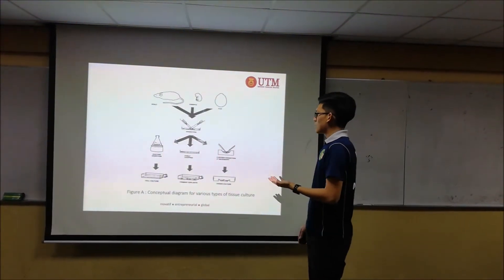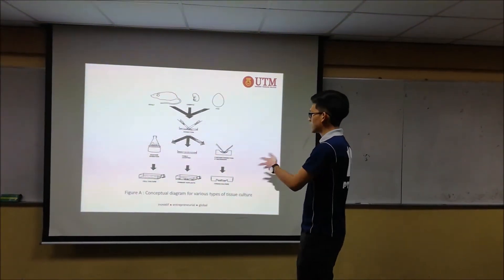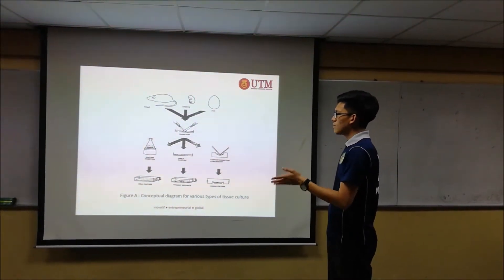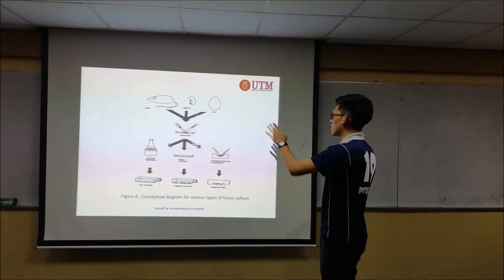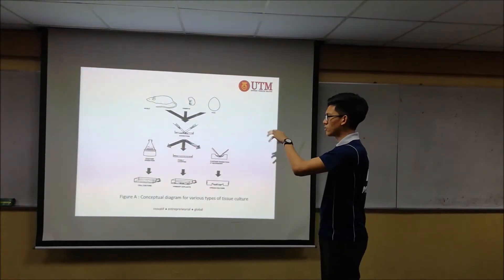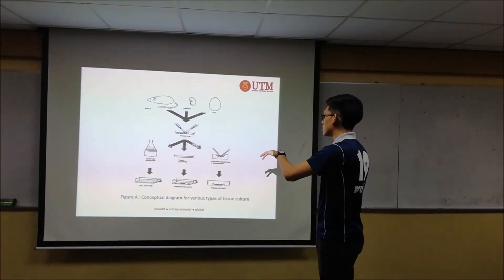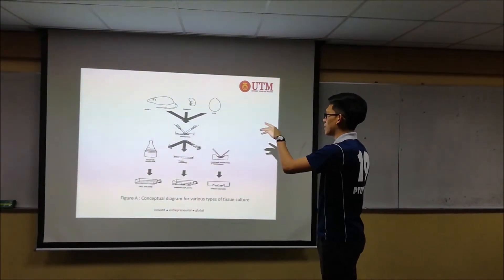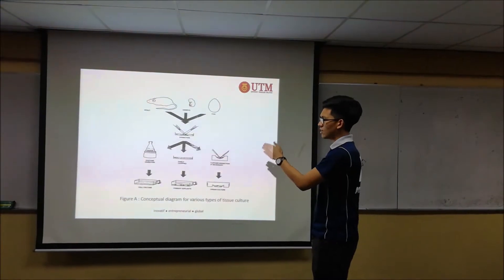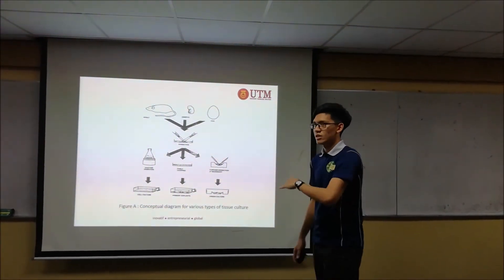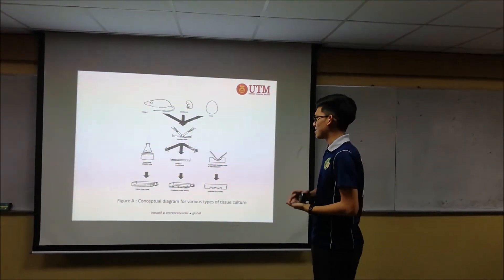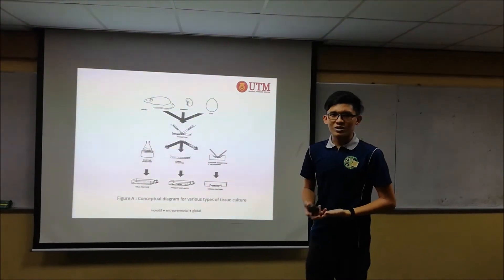This is a conceptual diagram for various types of cell tissue culture. The animal cell culture refers to the first diagram, where we extract the cell tissue from an adult, then dissect and further digest it, and culture it in the medium. That's basically the cell culture technology.